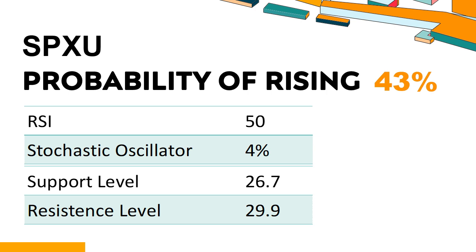Trend Outlook: SPXU has a 43% probability of rising stock price. When the probability of rising is lower than 50%, the probability of falling is relatively high. Combining multiple technical analysis indicators, SPXU has 4 bullish signals and 4 bearish signals. SPXU's short-term support level is 27; if it falls below 27, it will have a chance to test 26.7. The short-term resistance level is 29.4; if it breaks through 29.4, it will look up to 29.9.